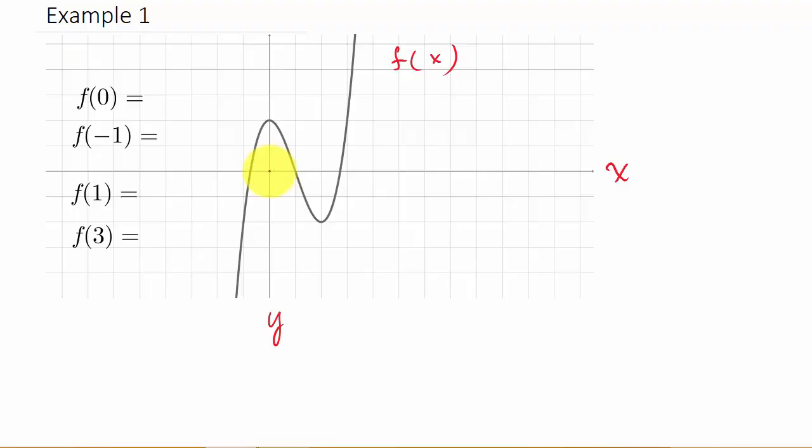And then we have to move either up or down, straight up or straight down, until we hit the graph. In this case, since we're right here at 0, we're going to have to move up. We hit the graph right here at y equals 1, 2. So f of 0 is equal to 2.